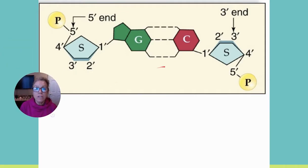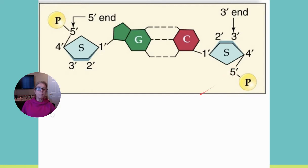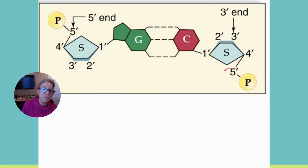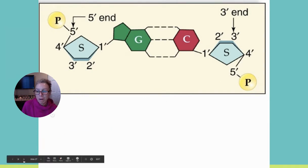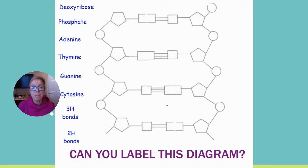The 3'/5' directionality becomes significant in DNA replication because enzymes read the 3' end of the template DNA and synthesize a new complementary strand in the 5' to 3' direction. So you synthesize 5' to 3' while reading 3' to 5' on the template strand. If an enzyme approaches and faces a 3' end, that will be the leading strand — easy to read. The 5' end requires a different approach.